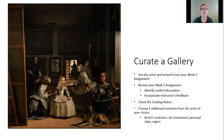You also want to check the grading rubric for the final project so that you know how you're going to be graded. Then you want to choose four additional artworks from the artist of your choice. When you choose those artworks, you want to think about the artist's evolution, how their artworks contributed to the art movement, how he or she grew in their personal style, and how you can see their specific region in their artwork.